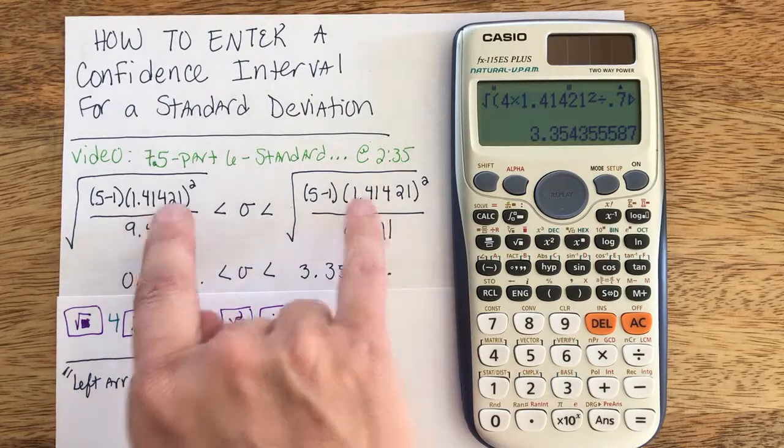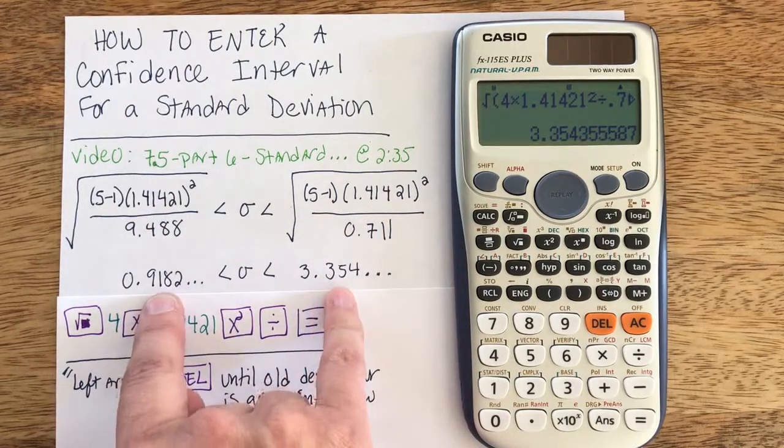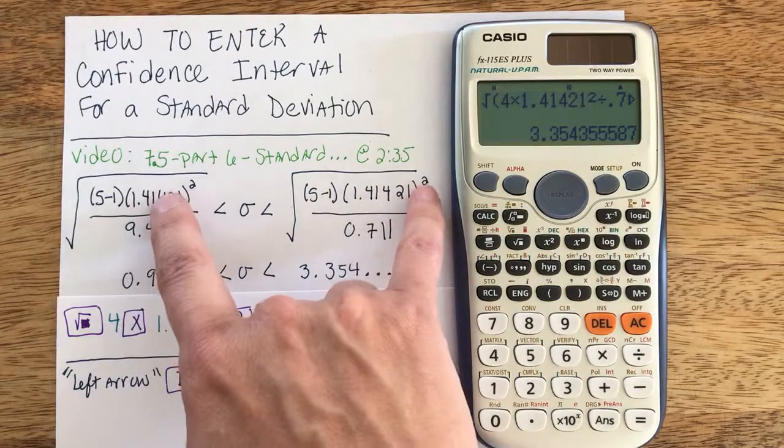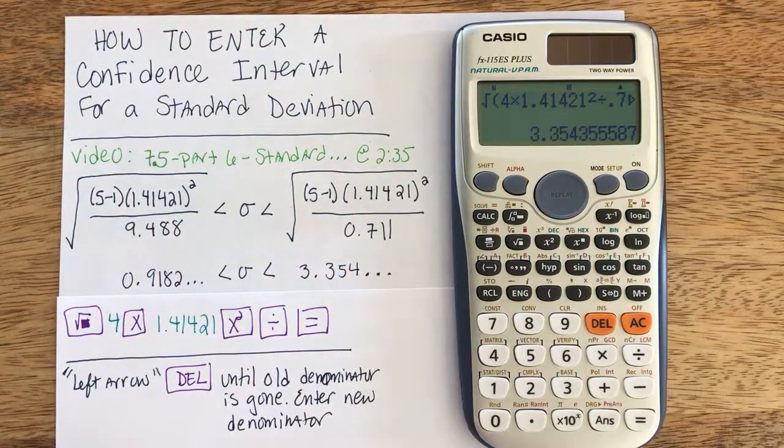And don't forget that s, your sample standard deviation, should be in between these two values. And if it's not, usually it's because you forgot to square or maybe messed up with the square root.